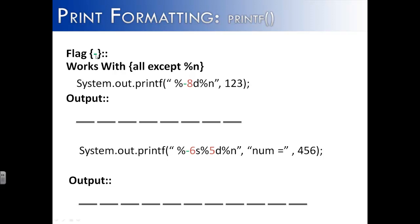So the flag hyphen works with everything except for %n, which would be kind of odd to have a line break that was left justified. So we can see here that we have eight spaces with our width, and so I've indicated the spaces with lines. They would not appear on the screen if they were printed.